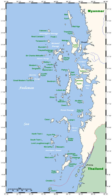Archipelagos may be found isolated in large amounts of water or neighbouring a large land mass. For example, Scotland has more than 700 islands surrounding its mainland which form an archipelago. Archipelagos are often volcanic, forming along island arcs generated by subduction zones or hotspots, but may also be the result of erosion, deposition, and land elevation.